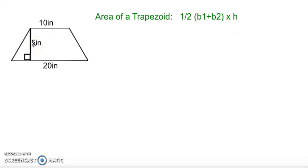So, when looking at the diagram below, you can see that one base has a length of 10 inches and the other a length of 20, and the height is 5 inches. When plugging our information into the formula, we see that we have one half, parentheses, base one, which is 10 inches,